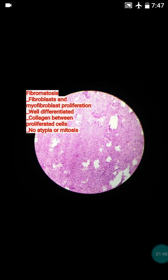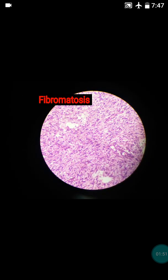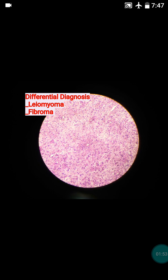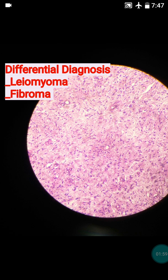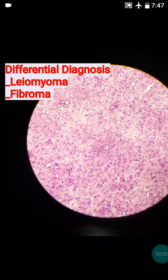The presence of collagen is a must for diagnosis. Now, the two important differential diagnoses are fibroma and leiomyoma. You might be surprised that leiomyoma can sometimes look like fibromatosis, as leiomyoma cells can have bland nuclei and can sometimes be spindle-shaped. So how will you differentiate it from fibromatosis?